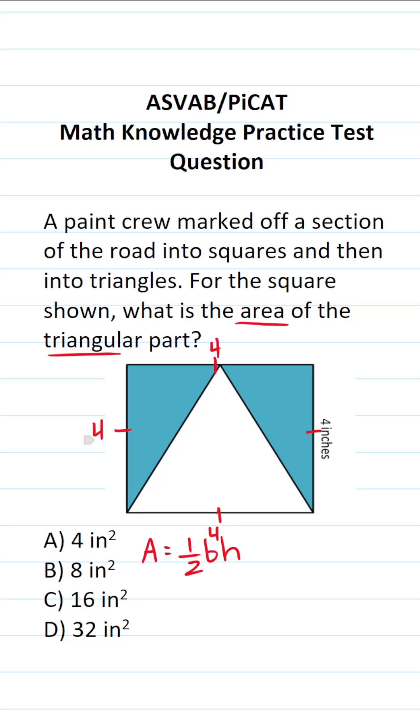This side length, as you can see, is the same thing as the base of our triangle. So we know B, the base of this triangle, is going to be four inches.